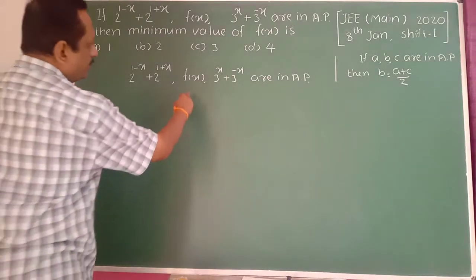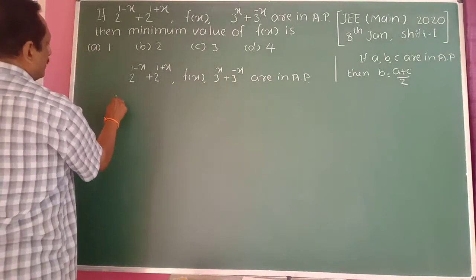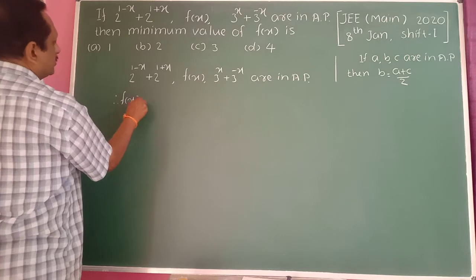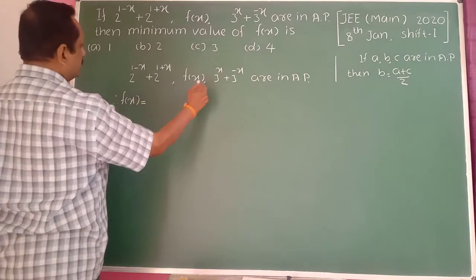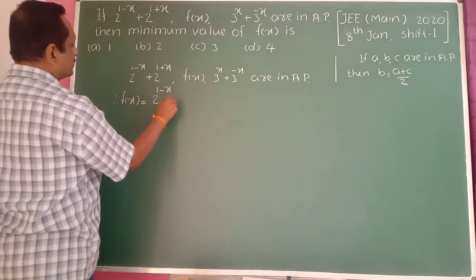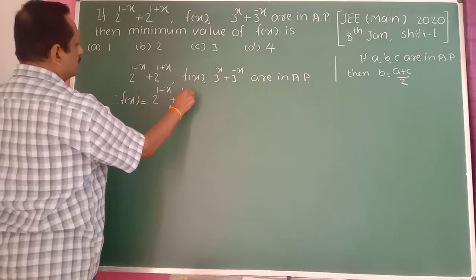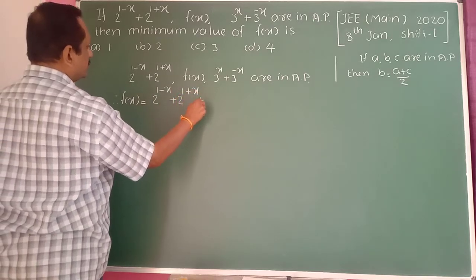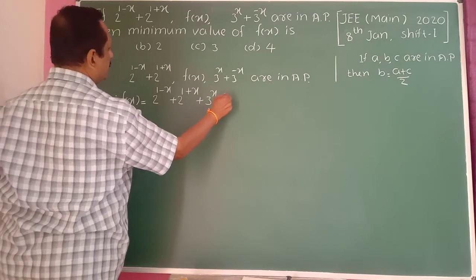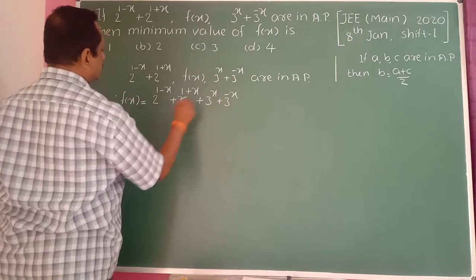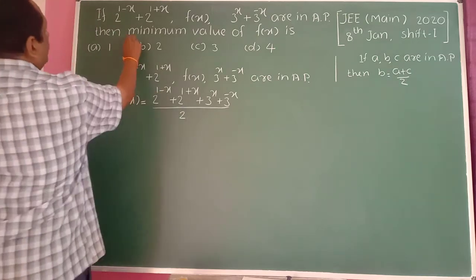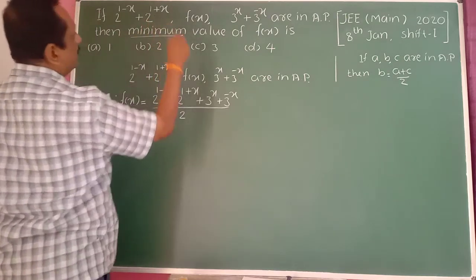Therefore, f of x is equal to the sum of the first term and third term divided by 2: that is, 2 raised to 1 minus x plus 2 raised to 1 plus x, plus 3 raised to x plus 3 raised to minus x, all divided by 2.